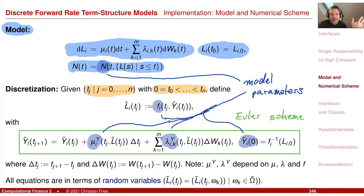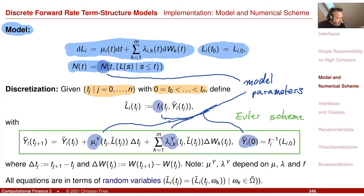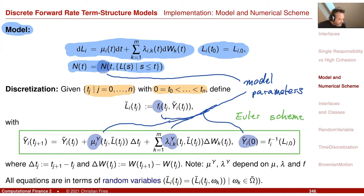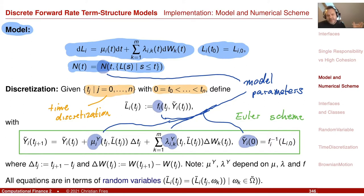Then we have the Euler scheme, and I want to reuse my Euler scheme implementation for many different models. I use these model specifications in an implementation that implements the Euler scheme. The Euler scheme can be reused for many different models — so that's also one thing that could define an object to implement. Then we have the time discretization.